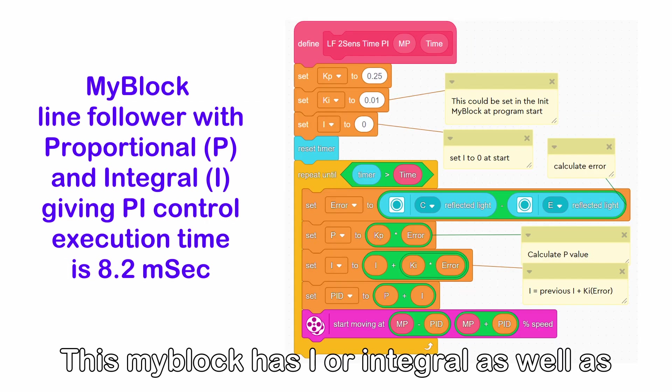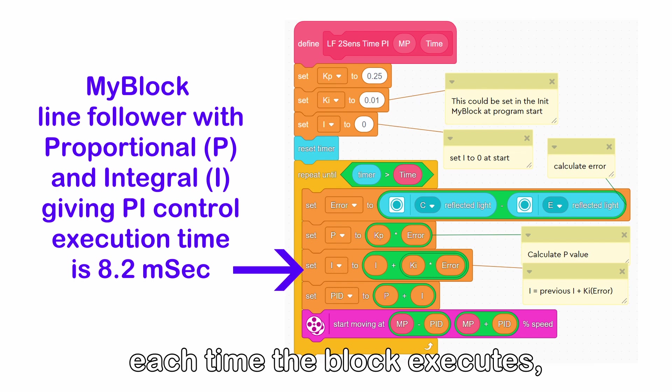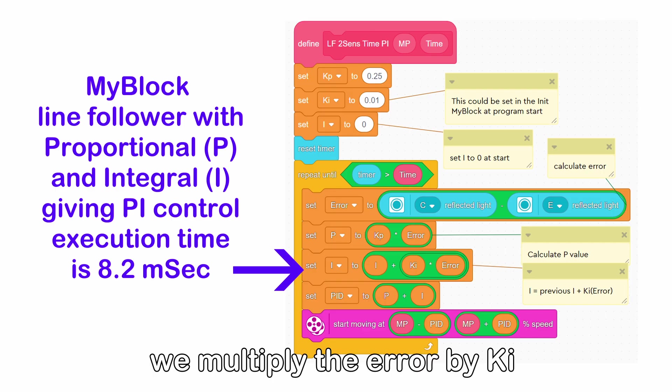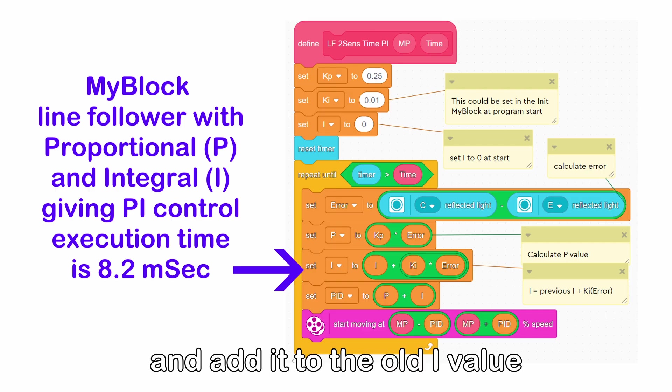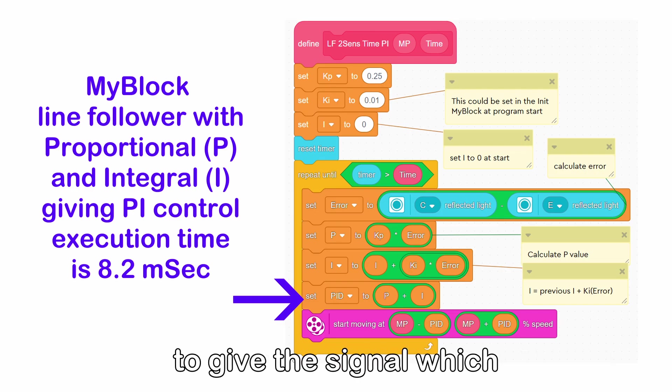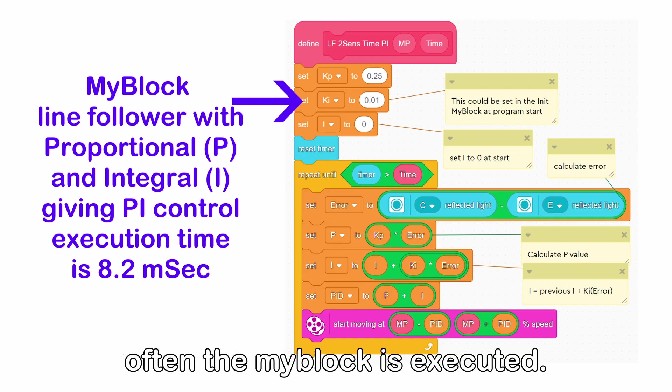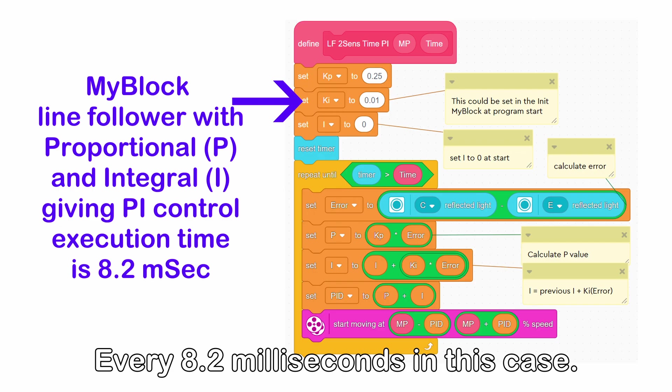This my block has I, or integral, as well as P. The I value is first set to 0, then each time the block executes, we multiply the error by KI and add it to the old I value to give the new I value. We then add the P and I values together to give the signal which controls the motor speeds. KI is quite small and depends on how often the my block is executed.